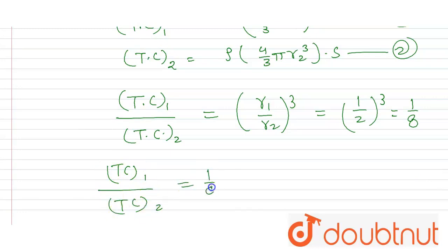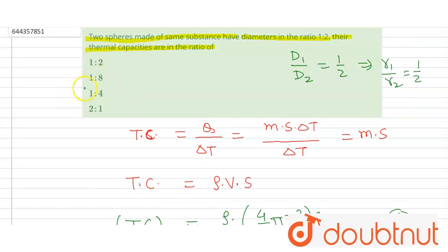So this is the ratio TC₁ divided by TC₂ equal to 1 by 8. So the correct option is 1 ratio 8. Thank you.